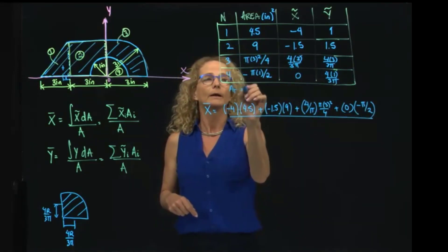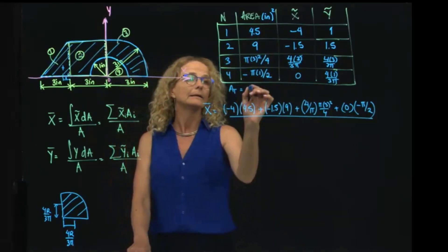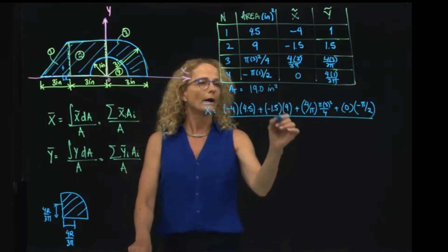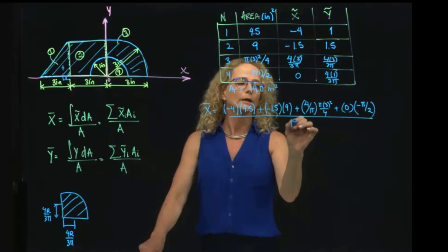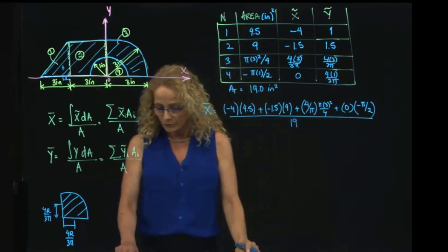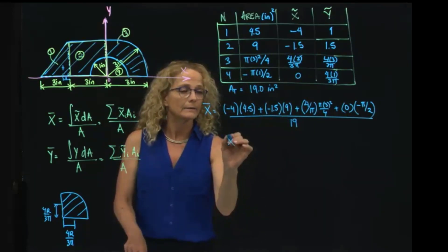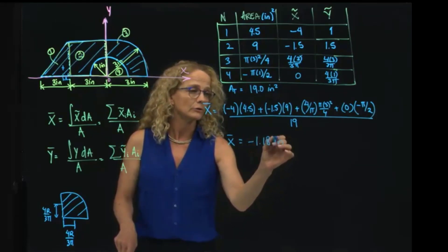The total area, I already calculated, and the total area if you add all these values is 19.0 inches squared. So adding all those values, I get the total area is 19 over here. If you do the calculations, and please do, I will find that x is equals to negative 1.18 inches.